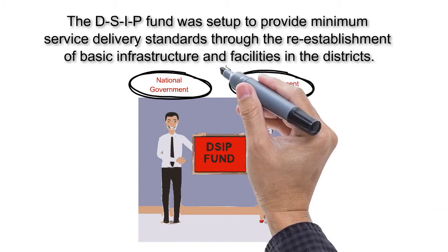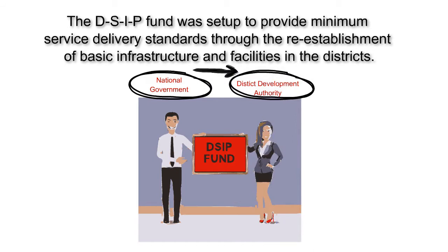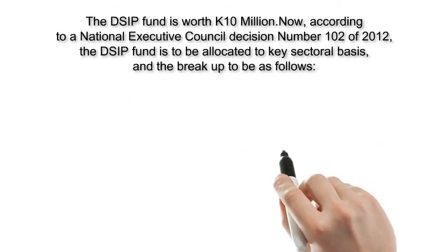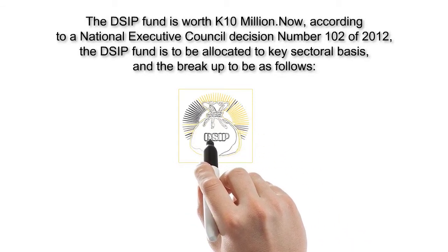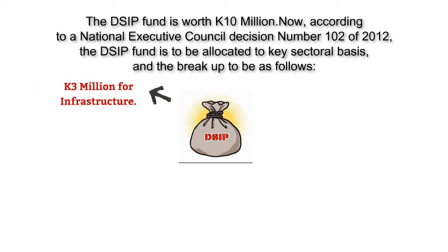the guidance of the Public Finance Management Act of 1995. The DSIP fund is worth 10 million kina. According to a National Executive Council decision number 102 of 2012, the DSIP fund is to be allocated to key sectoral basis and the breakup to be as follows: one, 3 million kina for infrastructure; two, 2 million kina for health